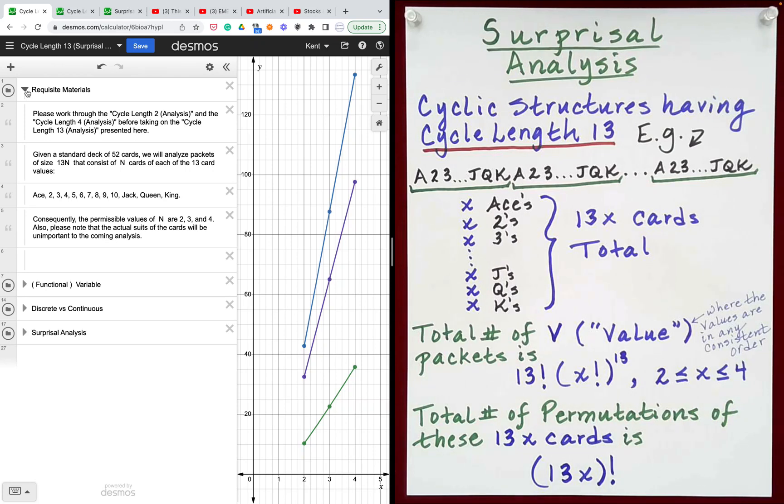Consequently, the permissible values of n are 2, 3, and 4. Also, please note that the actual suits of the cards will be unimportant to the coming analysis.